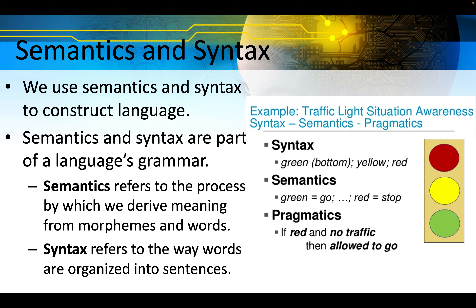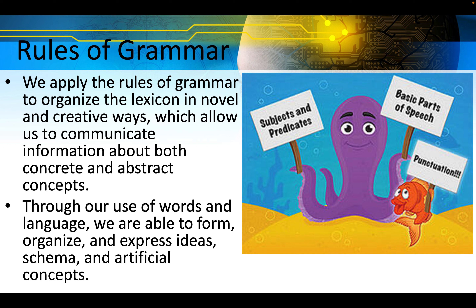We use semantics and syntax to construct language — both are part of a language's grammar. Semantics refers to the process by which we derive meaning from morphemes and words. Syntax refers to the way words are organized into sentences. We apply the rules of grammar to organize the lexicon in novel and creative ways, allowing us to communicate information about both concrete and abstract concepts. Through our use of words and language, we are able to form, organize, and express ideas, schemas, and artificial concepts.